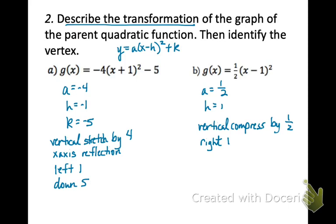Now let's identify the vertex. And remember, this is the easy part. It's just the h and the k values. So in part a, we have the vertex at negative one, negative five, because our h is opposite from what we see in the equation. And in b, it is positive one, zero.